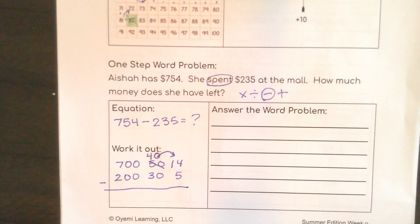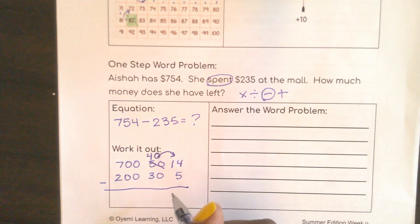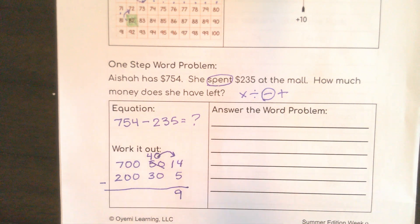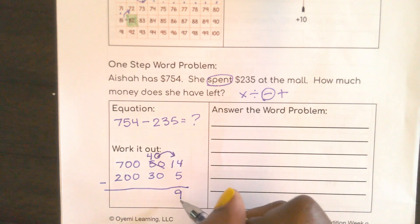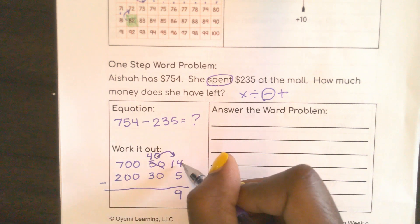So 14 minus 5 — five plus five is 10, and then I need four more, so altogether that will be 9. You should notice nine plus five equals 14.